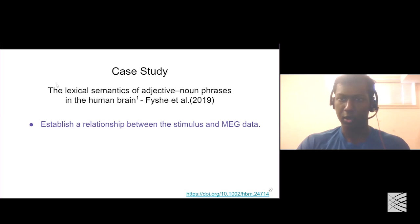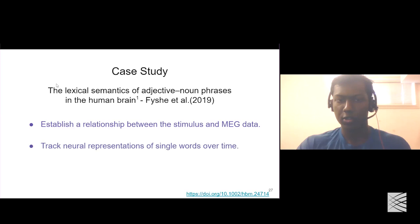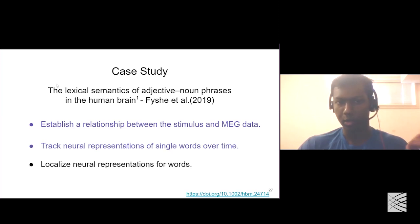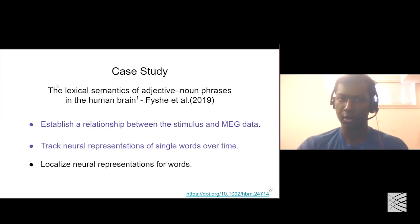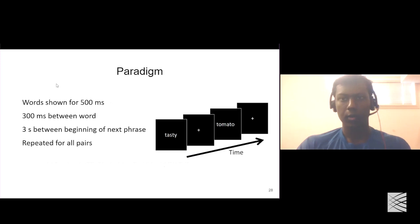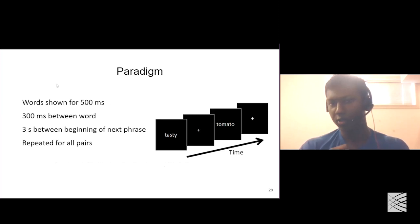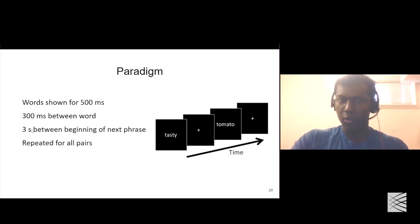In this paper, the task is to establish a relationship between the stimulus and the brain imaging data — a general decoding task where the stimuli are adjective-noun phrases. One contribution was to track the neural representations of single words — adjectives and nouns — over time. The regression model was also able to localize the neural representations of words and which part of the brain is activated when the participant looks at the stimuli.